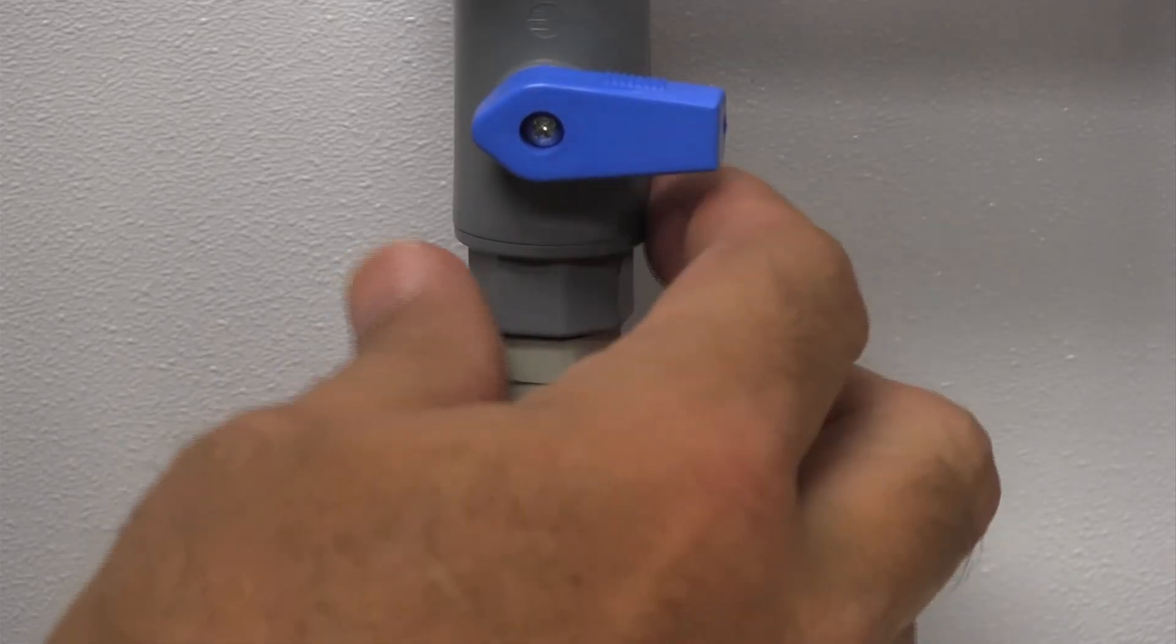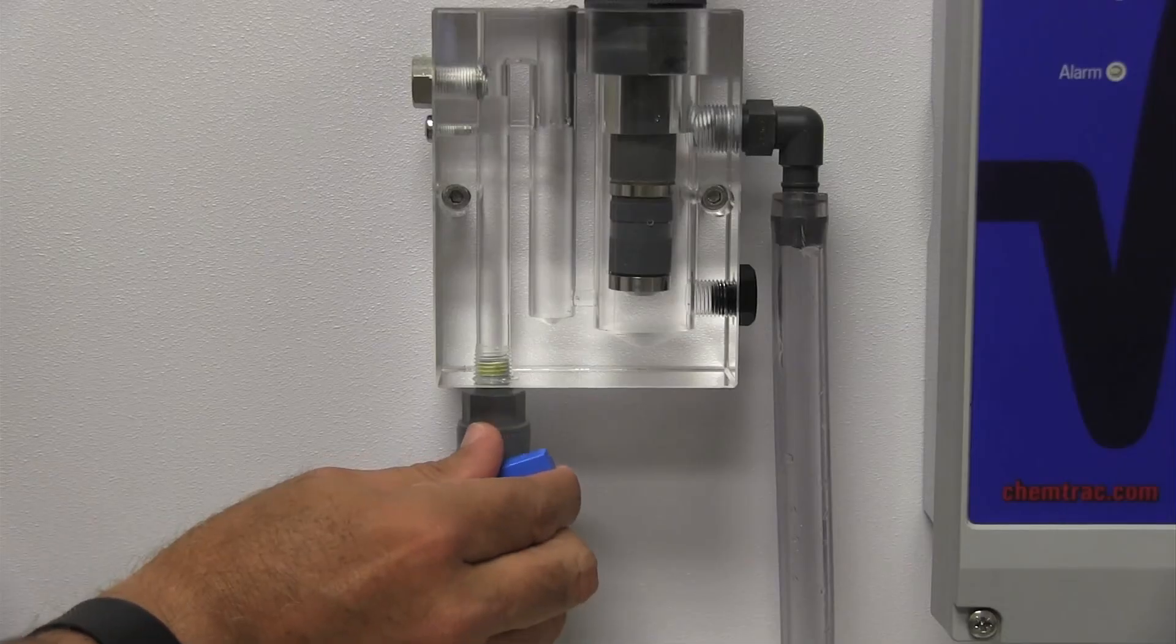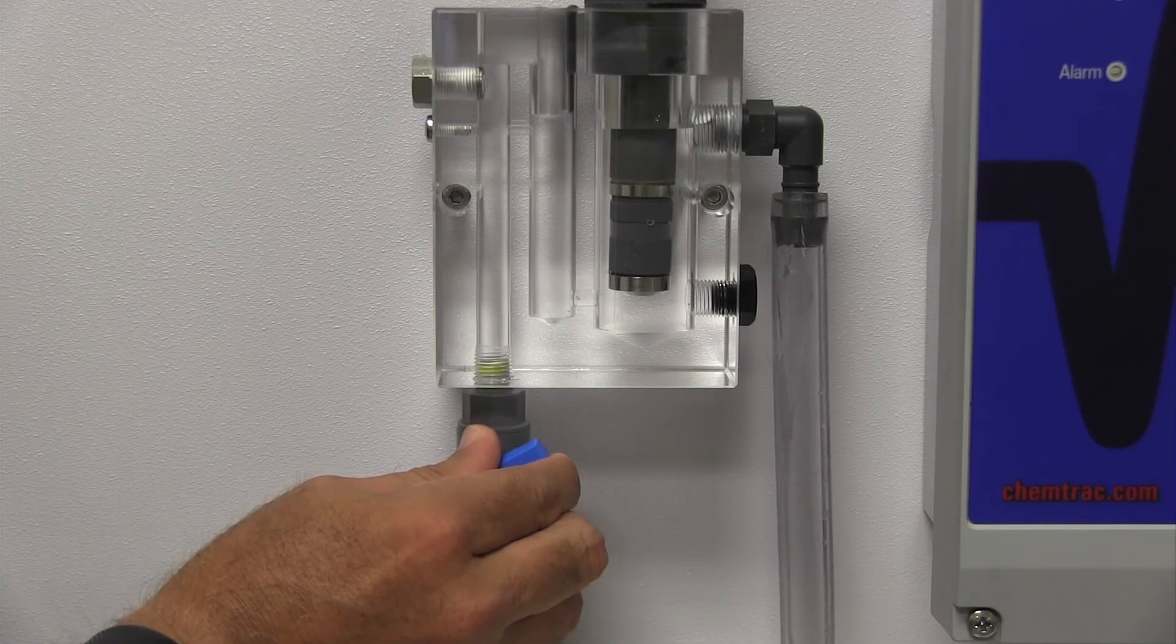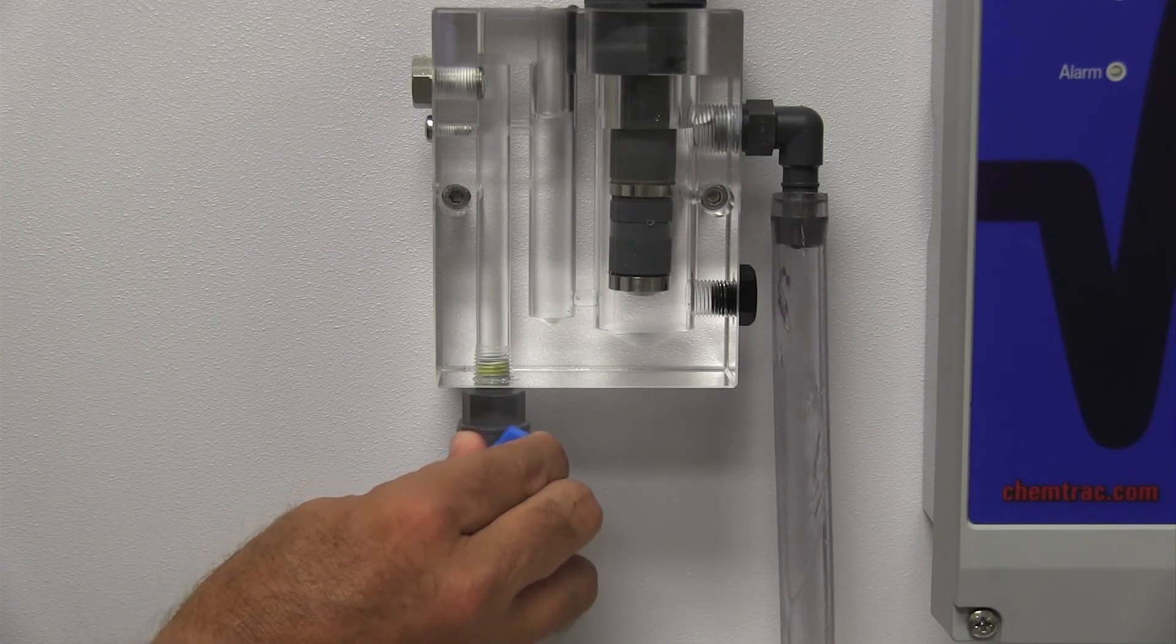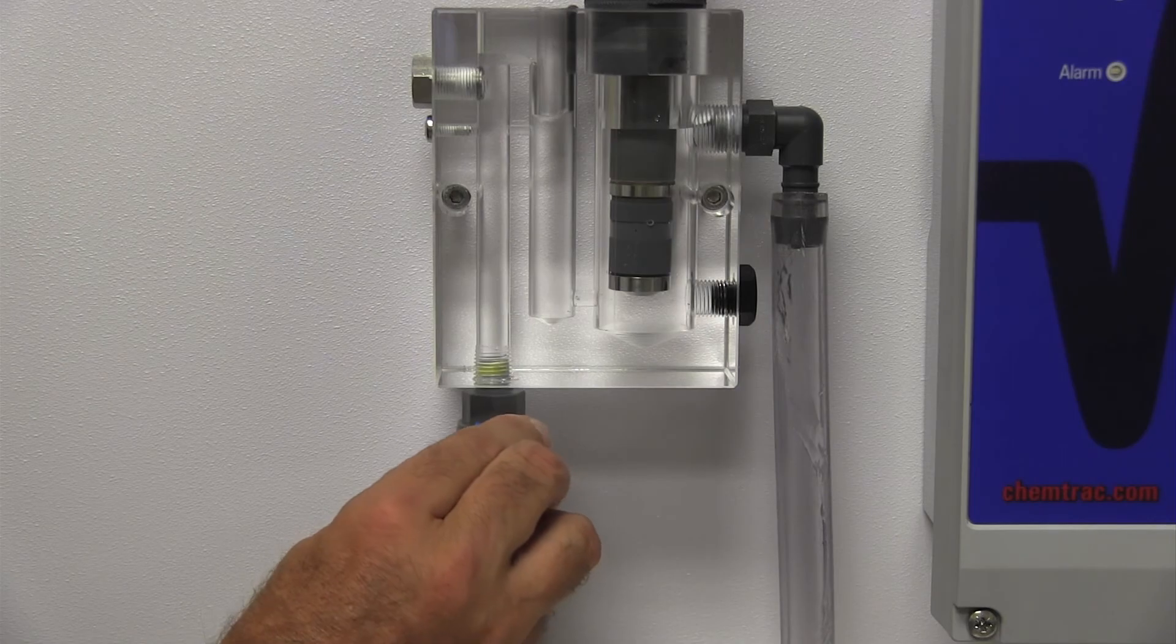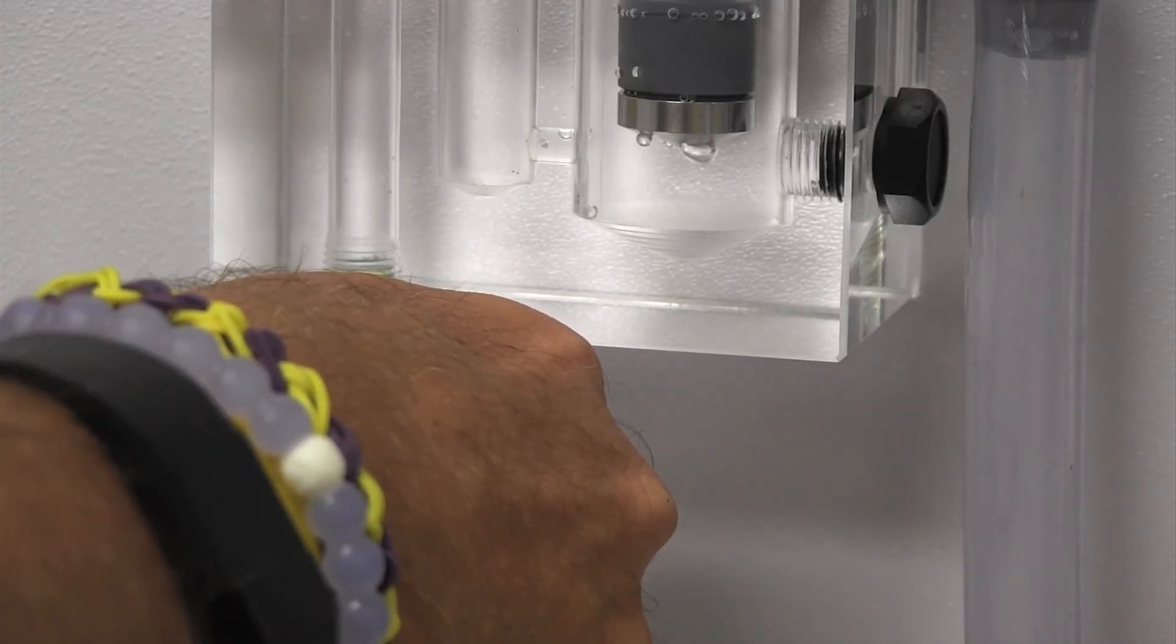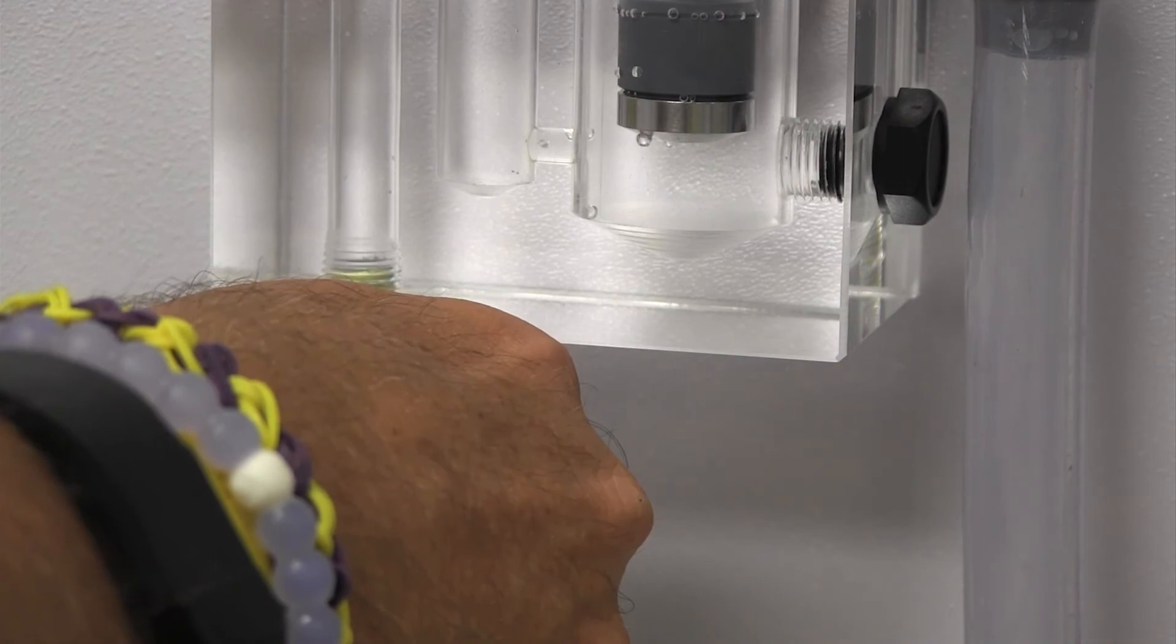Connect the sample tubing to the inlet fitting on the flow cell and start the flow of water. The recommended minimum flow rate is 500 milliliters per minute, but higher flow rates of 700 to 900 milliliters per minute may be needed to keep the membrane free of bubbles.